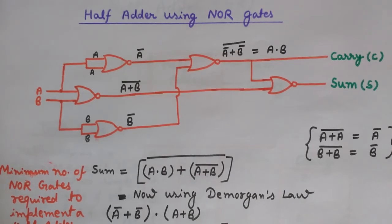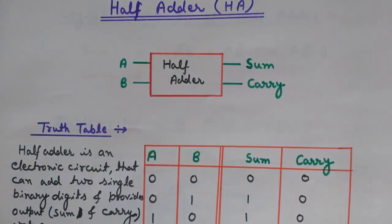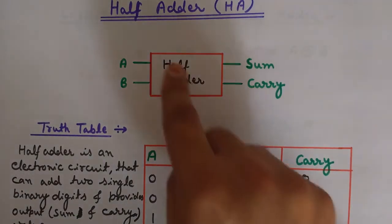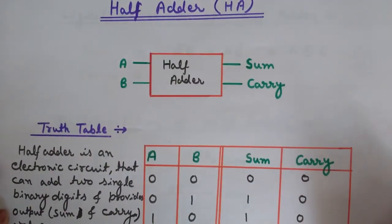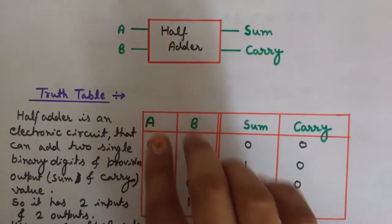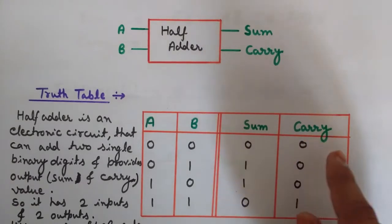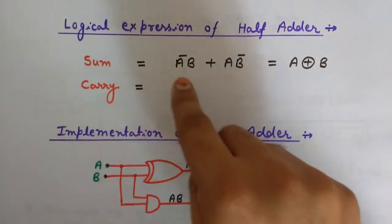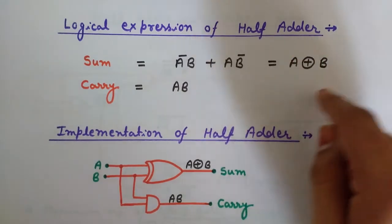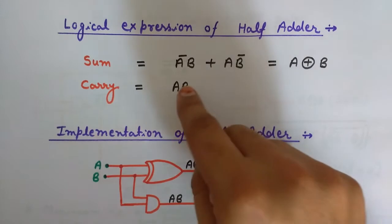In my last videos we discussed what a half adder is — we learned the truth table and from that we wrote down the boolean expression for the half adder. This is the half adder schematic diagram having two inputs A and B and two outputs: Sum and Carry. This is the truth table with inputs A and B, and Sum and Carry as the two outputs. The boolean expression for Sum is A̅B + AB̅, which is A XOR B, and the Carry expression is A·B.